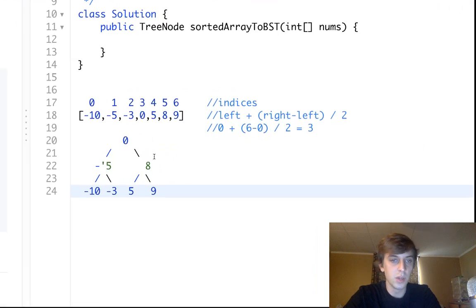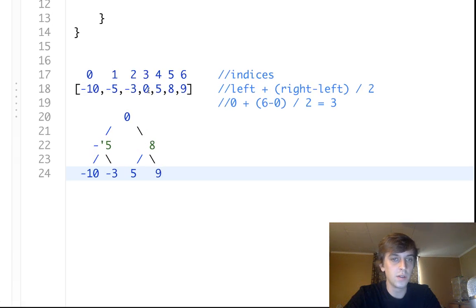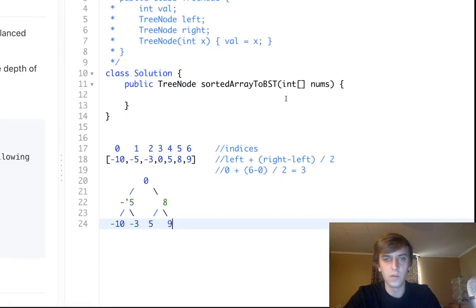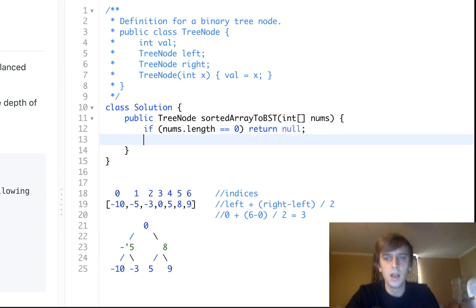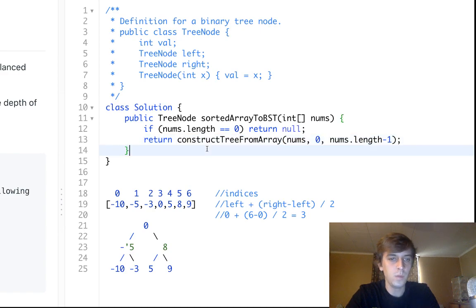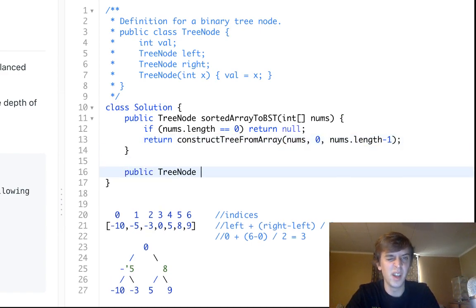And we can keep constructing this tree using a binary search. So first thing we're going to do is we're just going to say, we're given this array, the sorted array. And we see we have a tree node. We have access to the left, the right. We could set the left, the right, and the value. And there's a constructor, so we could pass the value in. So first thing we'll do is if our sorted array's length is zero, we'll just return null. Otherwise, we'll return a helper method called construct tree from array. And we'll pass in nums.length minus one.